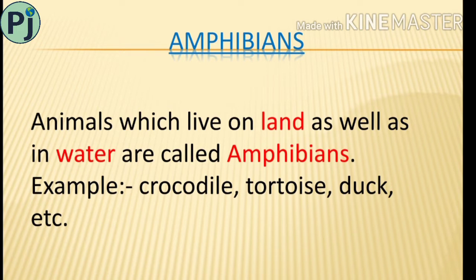Animals which live on land as well as in water are called amphibians. For example, crocodile — you will see that the crocodile remains both in water and on land. Other examples of amphibians include crocodile, tortoise, duck, etc.